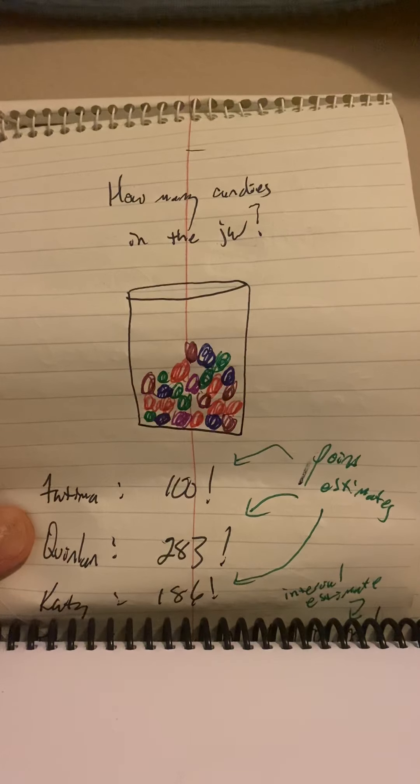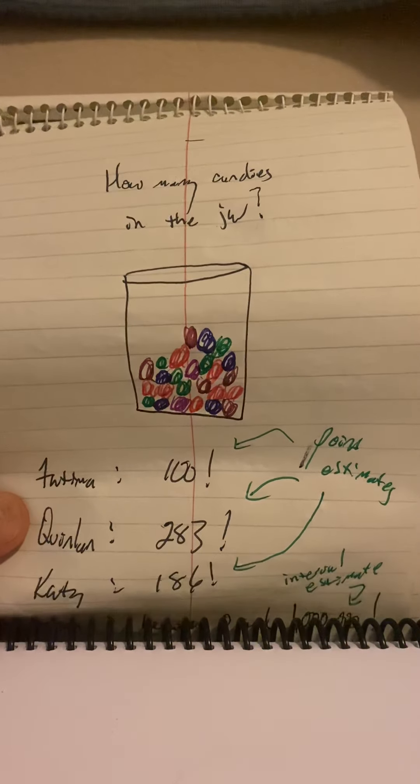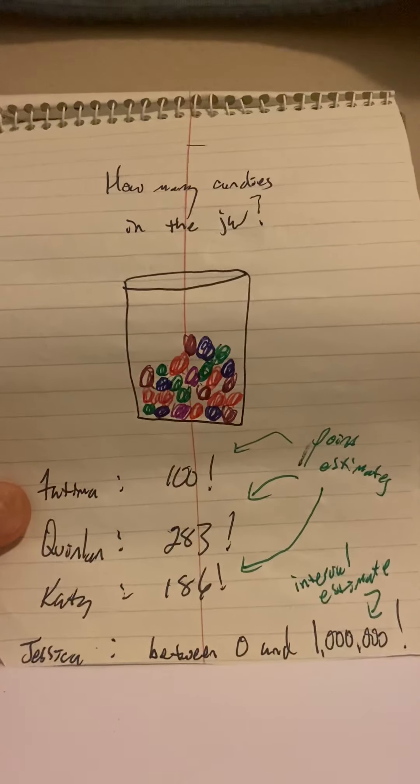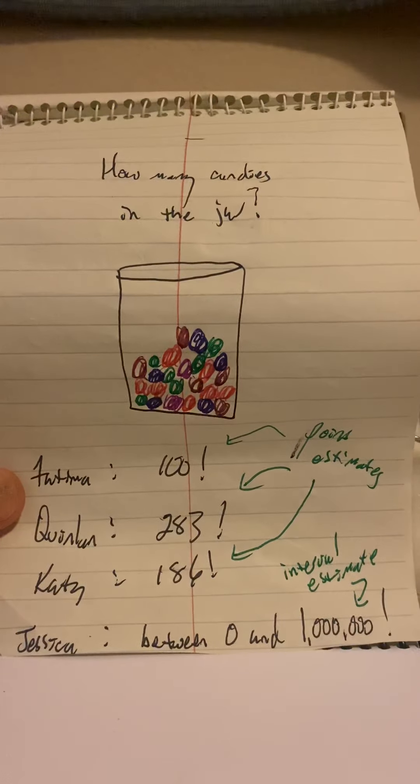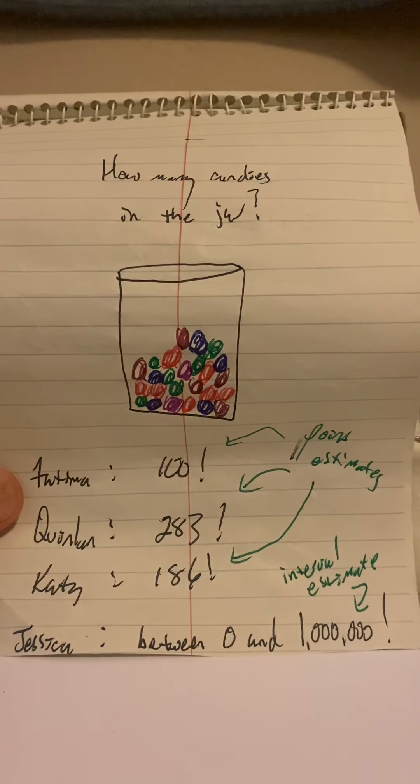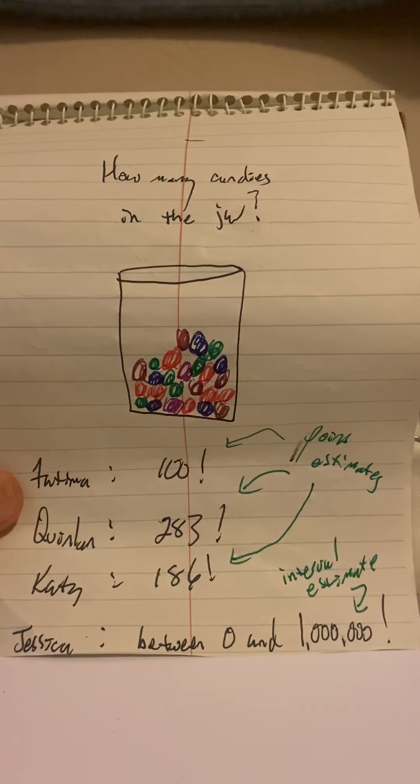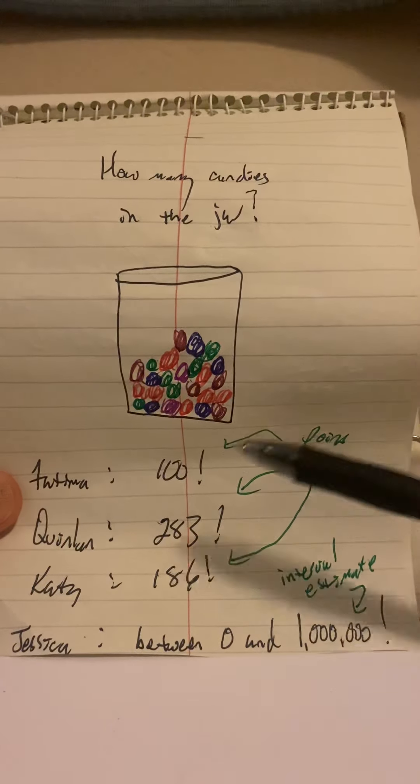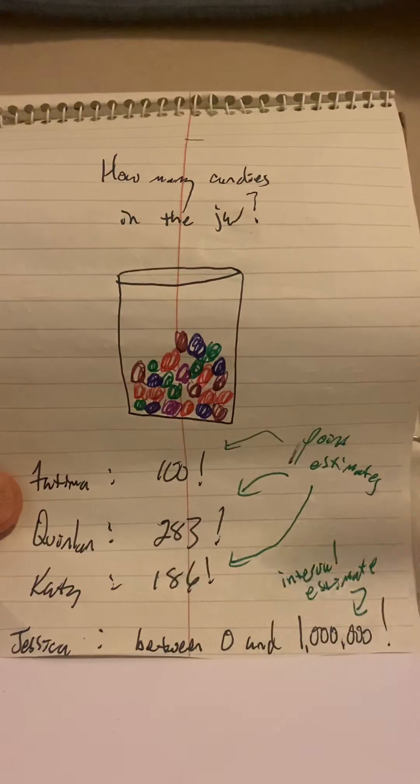Now, who's going to get the candies? Well, before the game is over, Jessica says there's between zero and one million candies. Jessica's the only one that's right. Everybody else is wrong. Jessica wins the candies. Hey, lucky for y'all, Jessica's nice. She's going to share.